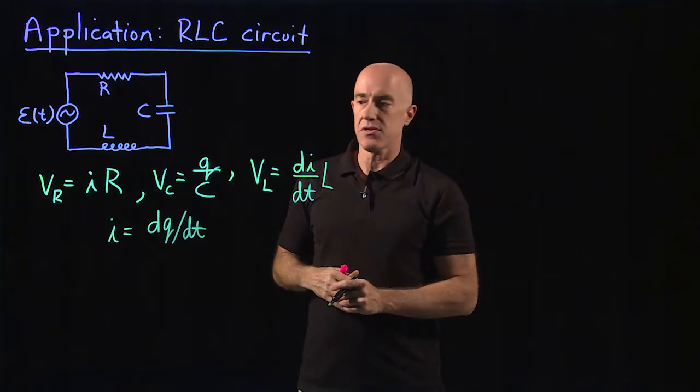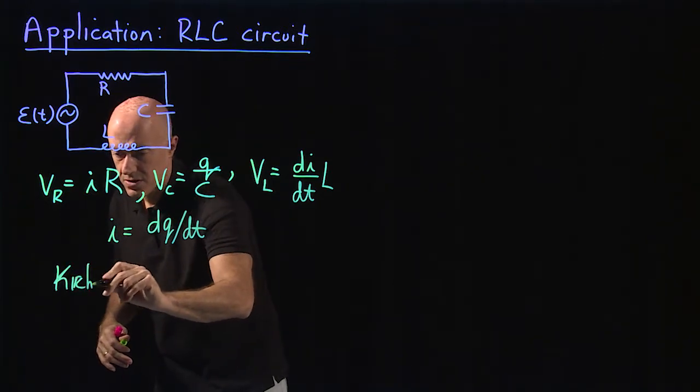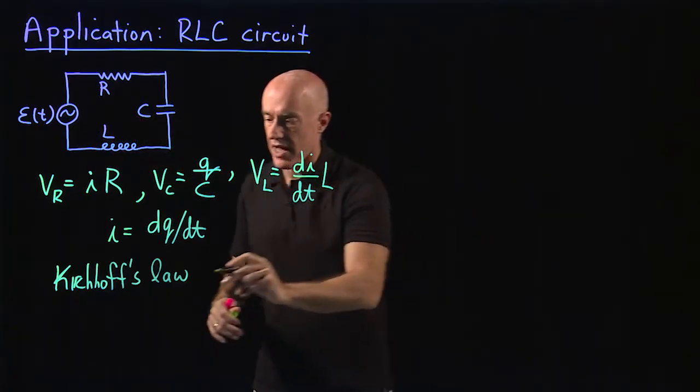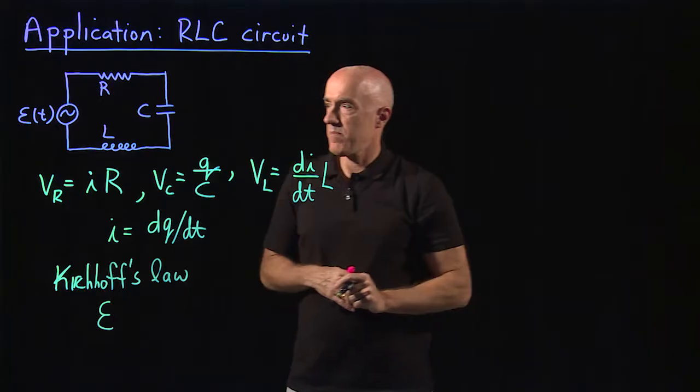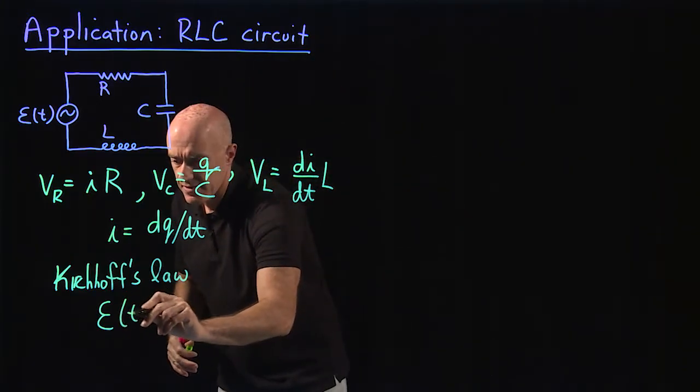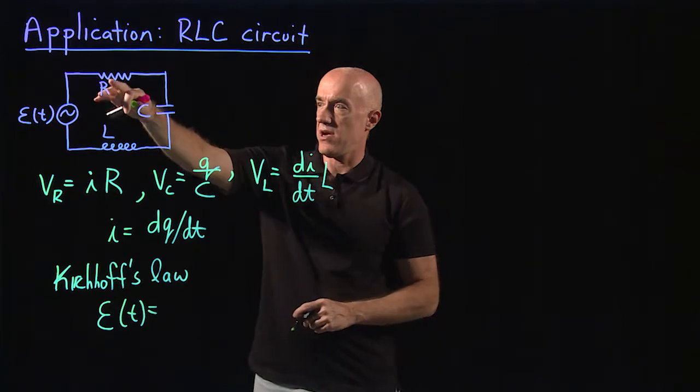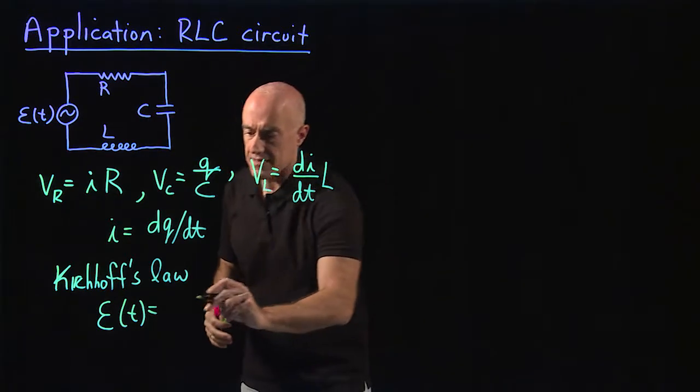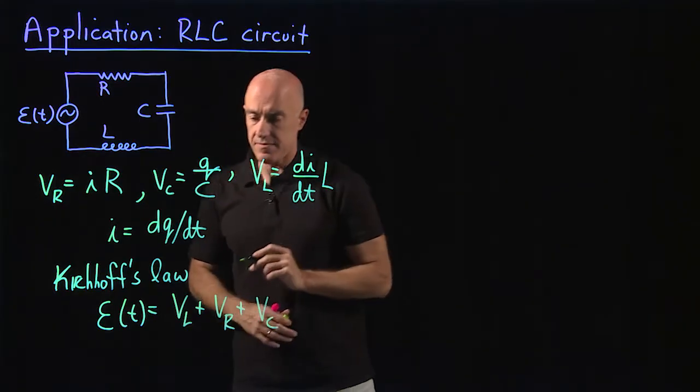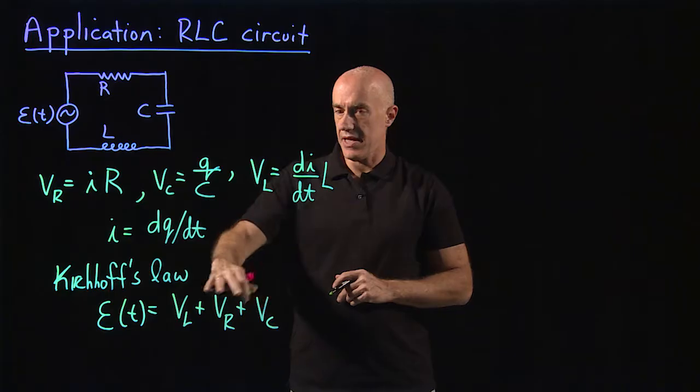How do we get a differential equation? The differential equation comes from Kirchhoff's law, which says that the voltage supplied by the battery, or here it's the AC voltage ε(t) or E(t), is equal to the voltage drop across each of the circuit elements when they're in series. So here let me write that as VL plus VR plus VC. And because these circuit elements have derivatives in them, this is a differential equation.